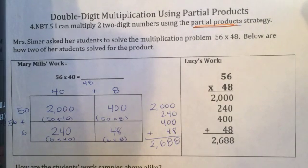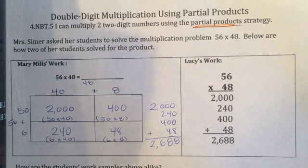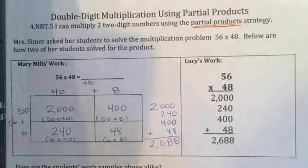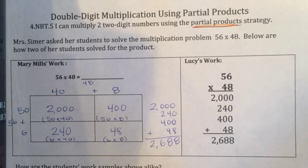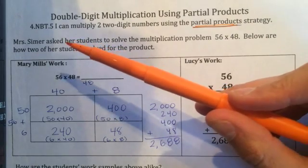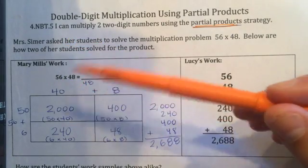Today we're going to learn about the partial products method for double-digit multiplication. I have a bit of a cold, sorry about that. Some of you learned the partial products method last week and some did not. If you need to take more time and really break it down, feel free to re-watch parts of the video so you can understand where the numbers are coming from. The first thing we need to do is read our 'I can' statement for today, which is very similar to what it's been earlier this week.